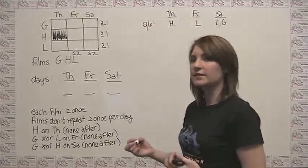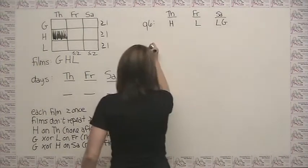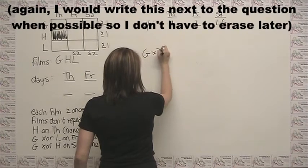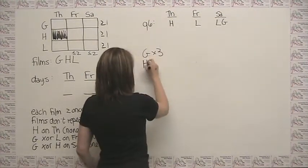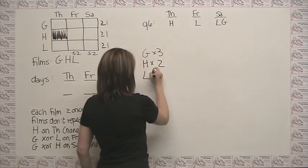So here I could write something like the following. I could say greed times three, H times two, and L times one.